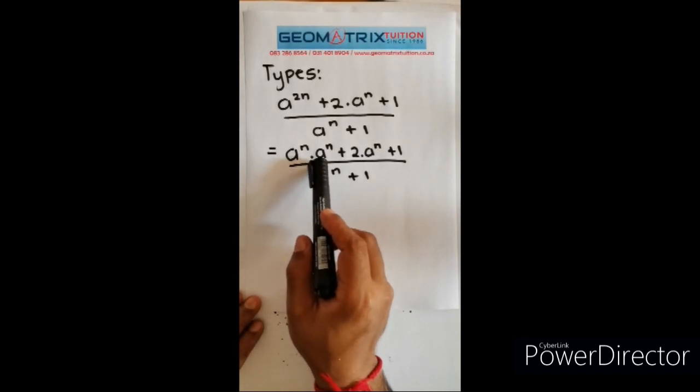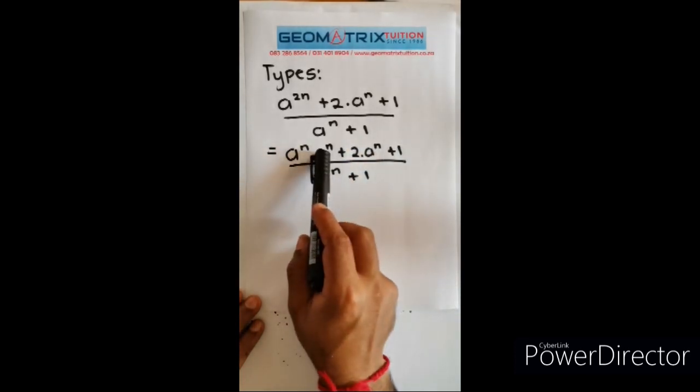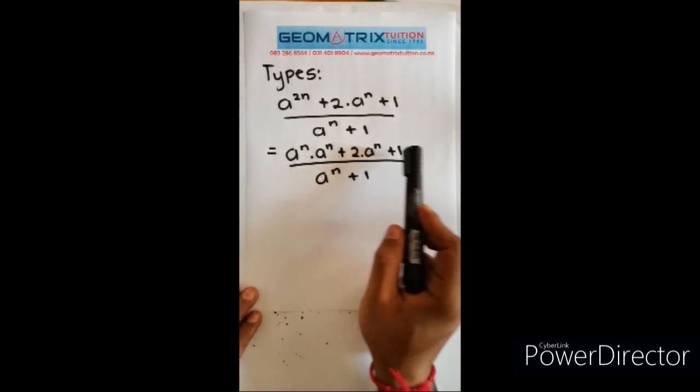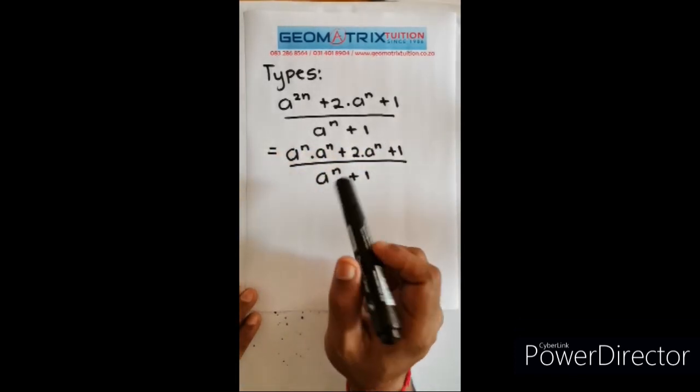Now you probably say sir, can I not just take out a common factor? No you can't, because there are three terms at the top and there is no common factor. There's a to the n common in the first term, a to the n common in the second term, but there's no a to the n in the third term, so you cannot remove a common factor.